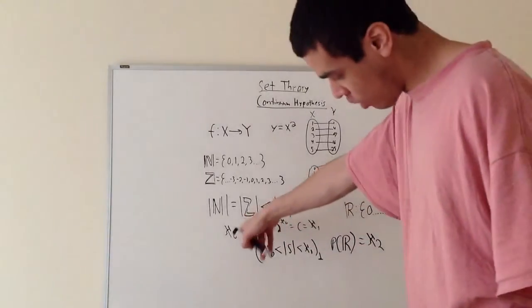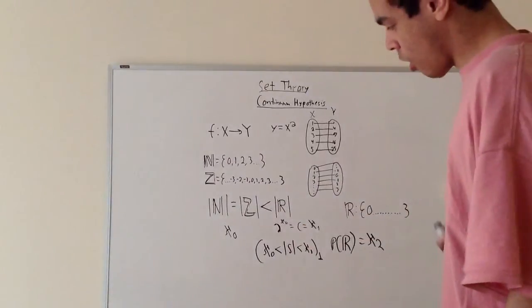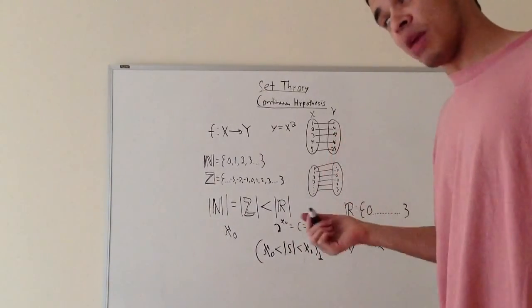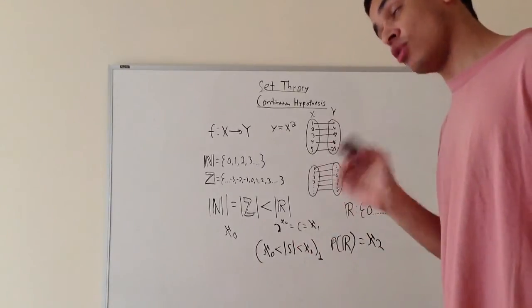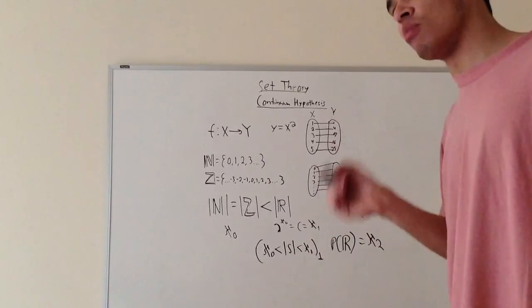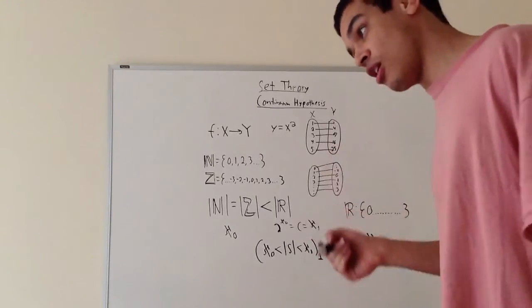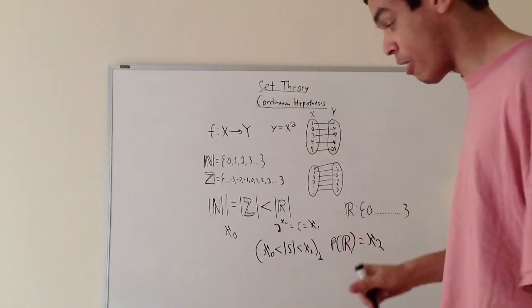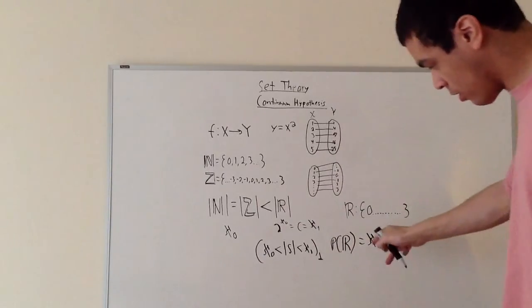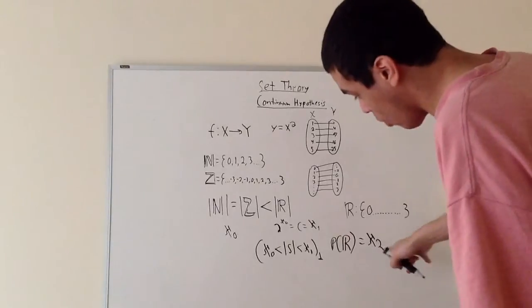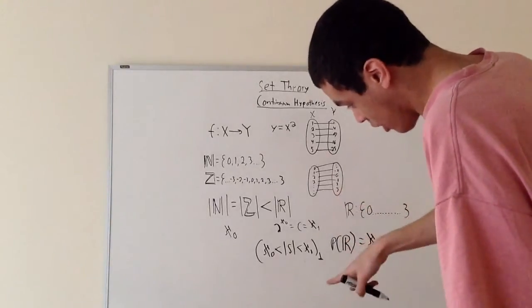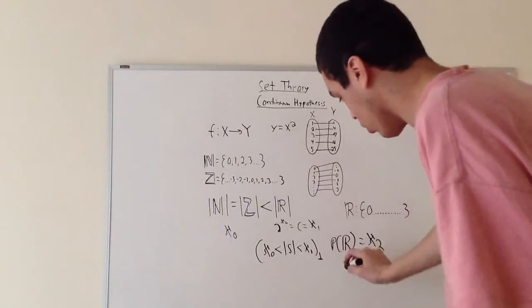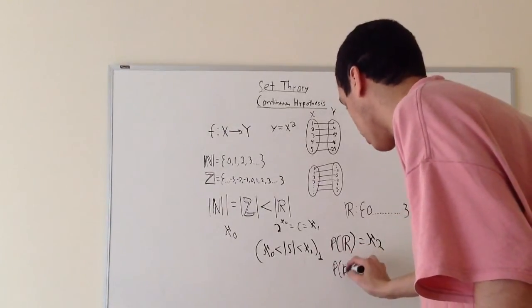Cardinals are like degrees of infinity: aleph-not, aleph-1, and so on. The power set of the reals has cardinality aleph-2, there's no cardinality between aleph-1 and aleph-2, then aleph-3 would be the power set of the power set of the reals. That's a really weird thing to think about — what exactly would the power set of the reals be, and what would the power set of that be? The number of elements in those sets is just incomprehensibly large.